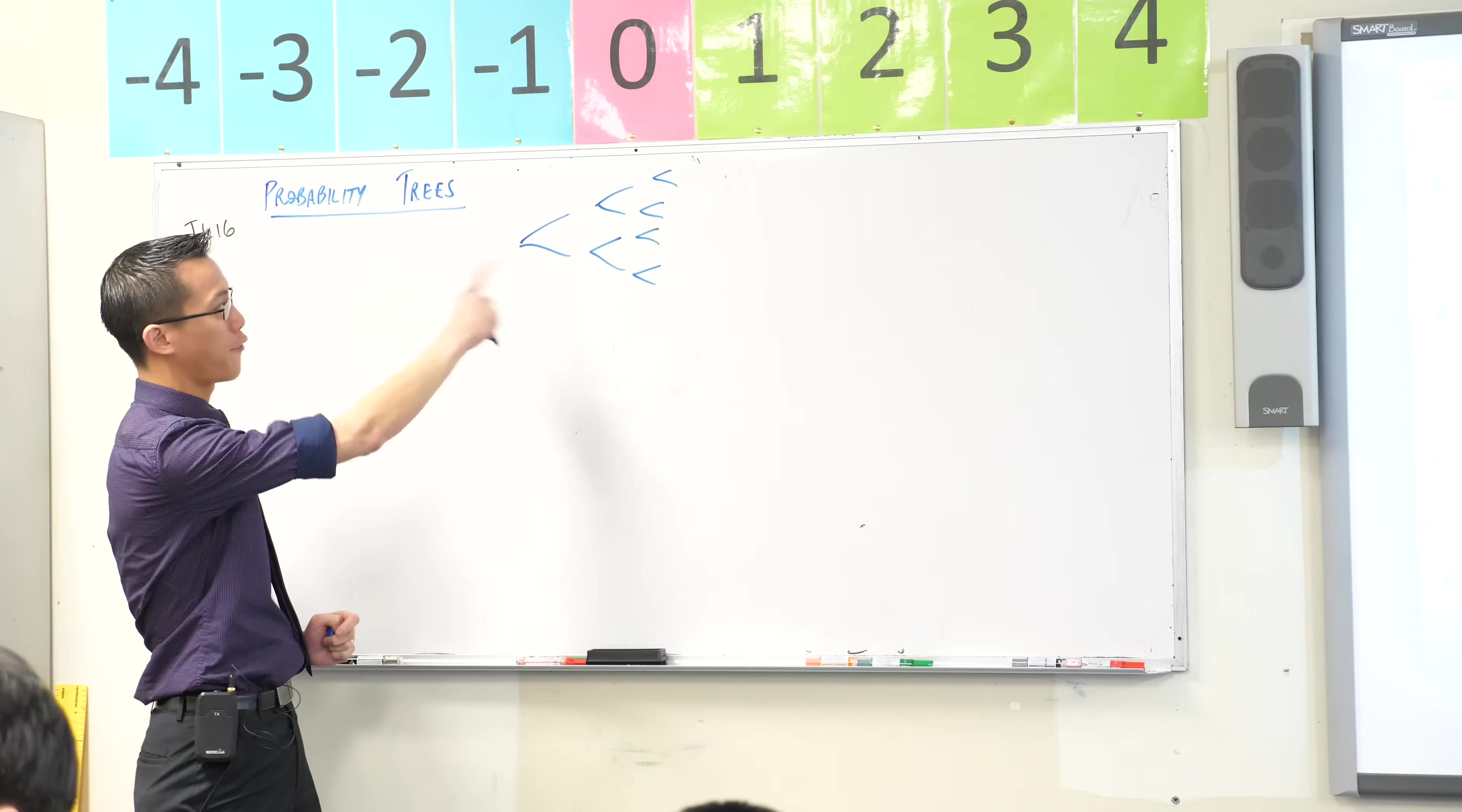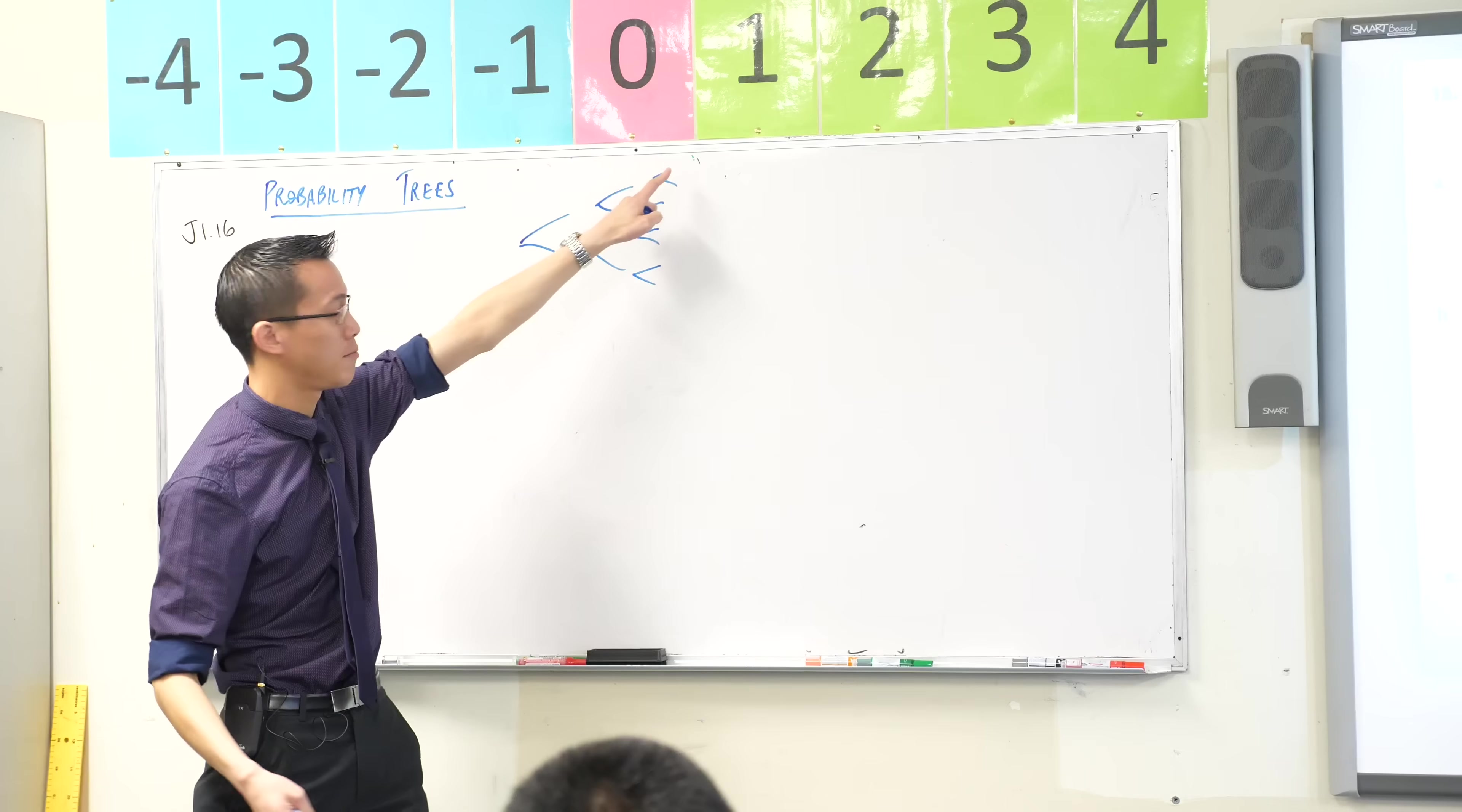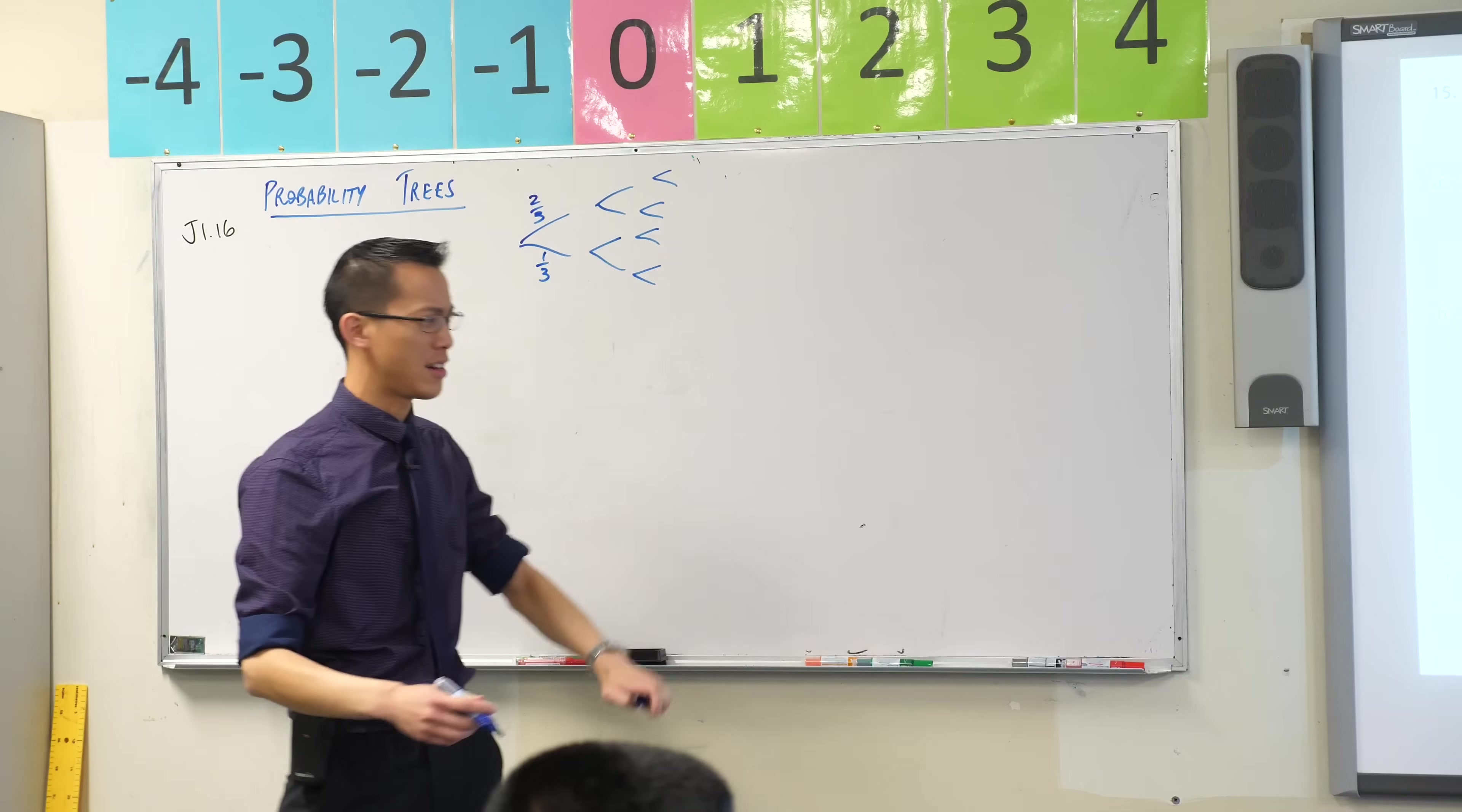All equally likely, which is why if for example we looked at flipping a coin three times in a row that gives you eight possible outcomes at the end and each one is equally likely, so it's one out of eight would be the chance for each one. But we use probability trees where we say actually these two are not the same, maybe one event is more likely than another.